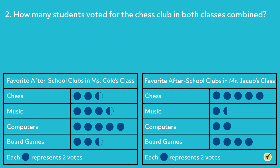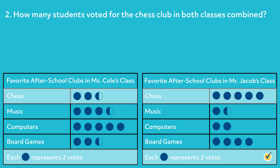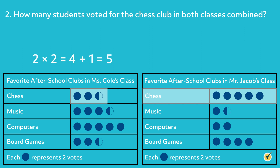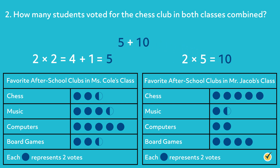How many students voted for the chess club in both classes combined? First, find the total number of votes for the chess club in each class. Recall that each symbol equals two votes, and each half symbol equals one vote. Starting with Ms. Cole's class, there are two whole symbols and one half symbol next to chess. To find the total votes, multiply each whole symbol by two and add one for the half symbol. Two times two equals four, and four plus one equals five. So there are five votes for chess club in Ms. Cole's class. In Mr. Jacobs' class, there are five whole symbols next to chess. To find the total votes, multiply each whole symbol by two. Two times five equals ten, so there are ten votes for chess club in Mr. Jacobs' class. Add these votes to find the total. Since five plus ten equals fifteen, fifteen students voted for the chess club in both classes combined.